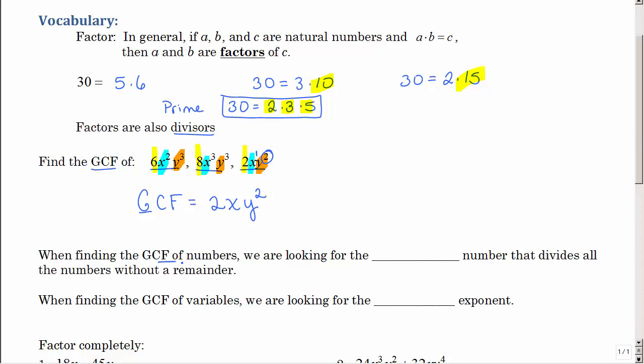When finding the GCF of numbers, we are looking for the largest number that divides all the numbers without a remainder. When finding the GCF of variables, we are looking for the smallest exponent on the letter that they have in common. If you go back up to here, that's exactly what we did.